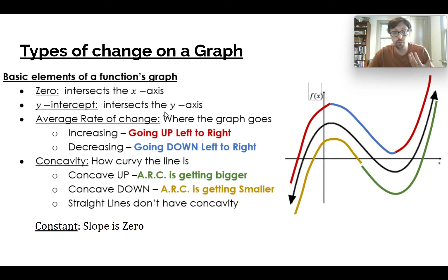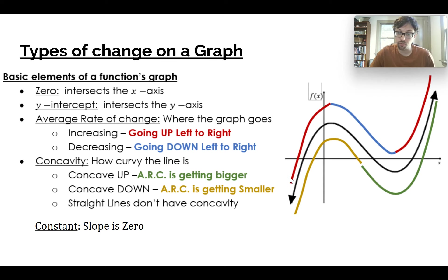The average rate of change is where the graph is either increasing or decreasing. This red line is where we are increasing. On this part of the function we are going up, as well as this part of the function.